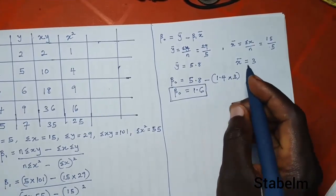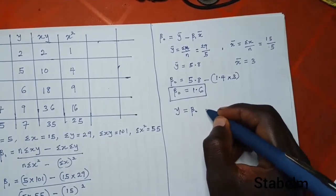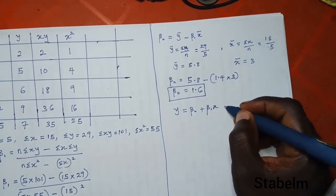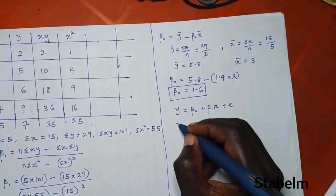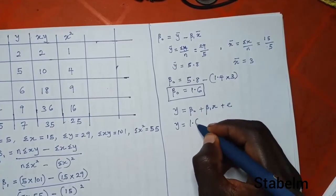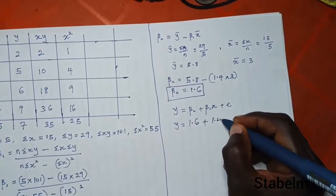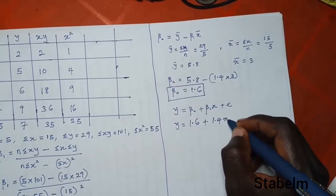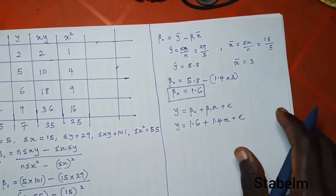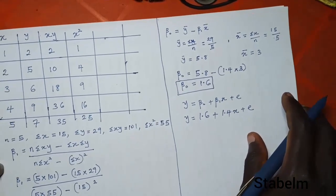So if you want to formulate the model, we have y equals beta naught plus beta 1 x plus error term. That gives us y equals 1.6 plus 1.4x plus error term. From here, we want to find the standard error of estimation.